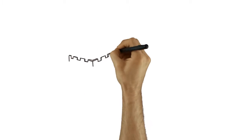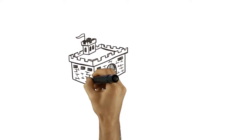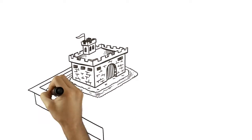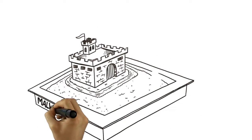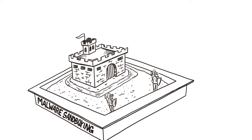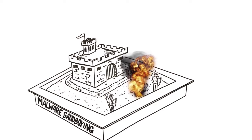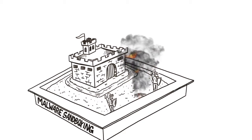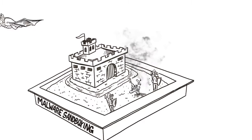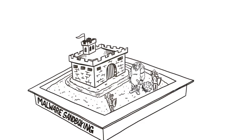5. Multi-stage downloads. Sandboxes will usually catch a malware dropper file downloading. Responders will clean it up and think all is well, but the dropper may download files in stages so the device is compromised without the security team's knowledge.